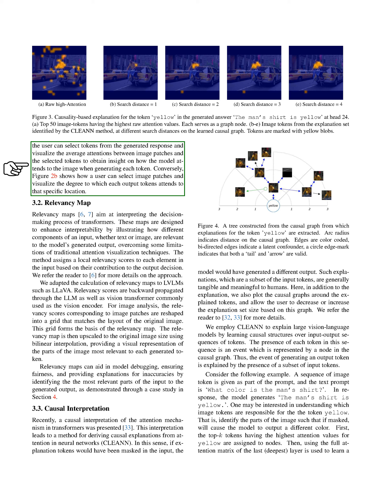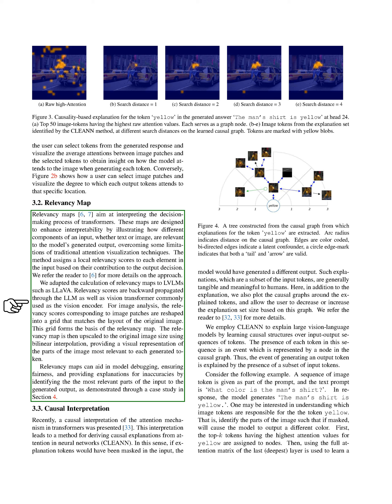In this section, we aim to explain how relevancy maps help us understand how transformers make decisions. These maps show us which parts of an input, like text or images, are important for the model's output. This method gives a score to each part of the input based on how much it affects the final decision. By adapting this method to LVLMs like LLaVA, we can see which parts of the input are crucial for the model's output. For images, the scores are reshaped into a grid that matches the original image layout, creating a relevancy map. This map is then scaled up to the original image size, showing visually which parts of the image are most important for each output token. Relevancy maps are useful for debugging models, ensuring fairness, and explaining mistakes by highlighting the key parts of the input that influence the output.